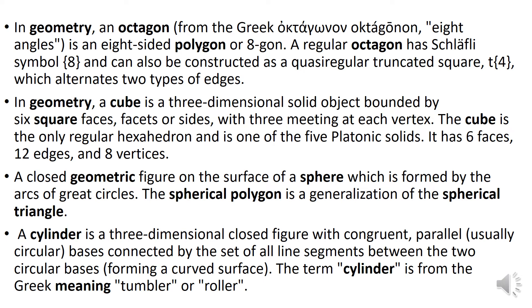Octagon. An octagon has eight angles. It is an eight-sided polygon or eight-gon. A regular octagon has a graph symbol and can also be constructed as a quasi-regular truncated square, which alternates two types of edges.